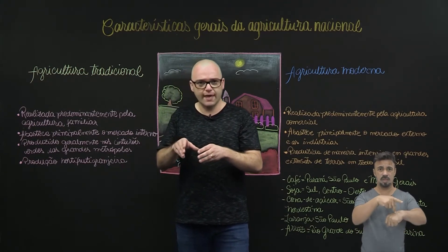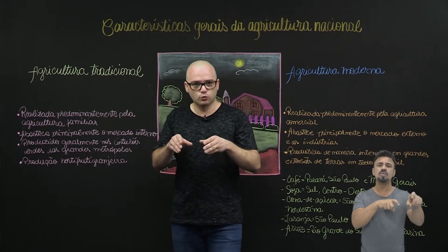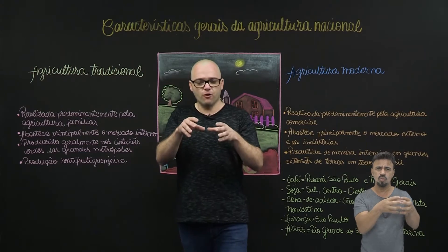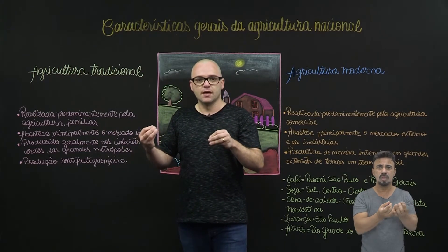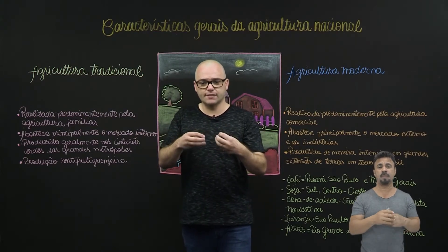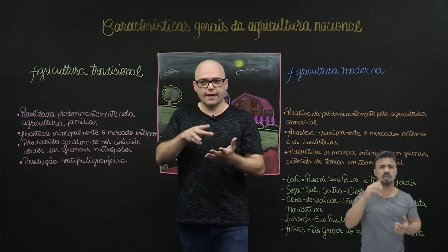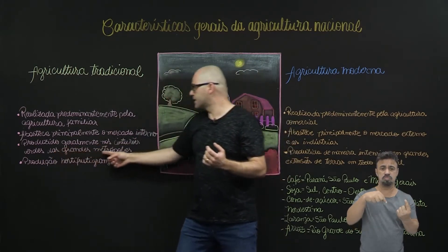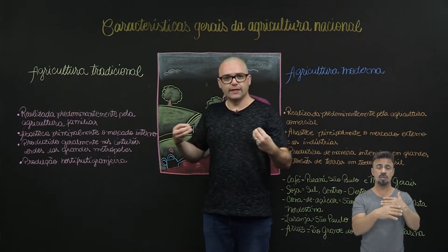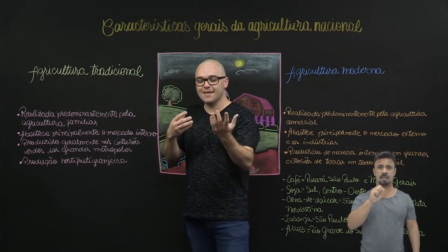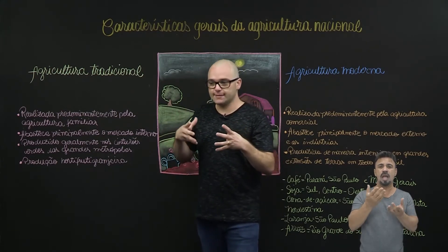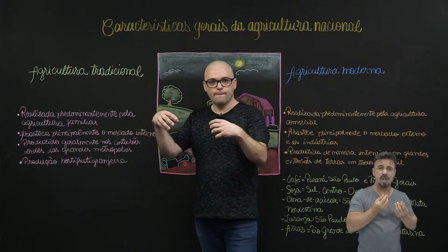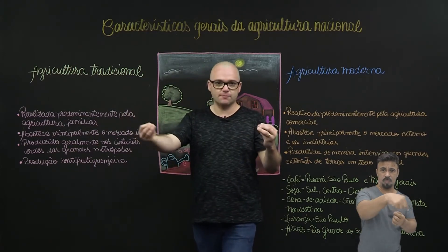Isso acontece muito nas pequenas propriedades rurais, nos sítios, nas agriculturas familiares, nas pequenas cooperativas, principalmente focadas para o abastecimento das grandes metrópoles. Pequenas áreas rurais de produção primária, principalmente agrícola, vão estar nos arredores dos grandes centros, nos chamados cinturões verdes das grandes metrópoles. Toda região metropolitana vai ter um CEASA, que é um centro de abastecimento agropecuário das cidades. É para onde vão todos esses agricultores que mandam o seu produto do cinturão verde, dessas áreas periféricas das cidades, para esse centro, que vai ser rapidamente consumido pela população.